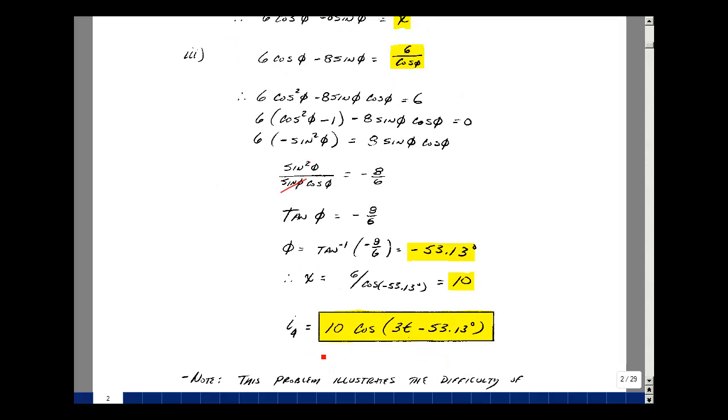So my value for i4 is 10, and my angle phi, so my final result is 10 times the cosine of 3t minus 53.13 degrees.